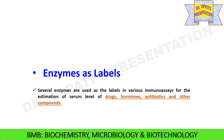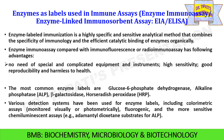Enzymes are also used as labels in various immunoassays for the estimation of serum levels of drugs, compounds, hormones, antibiotics and other compounds. Enzyme-linked immunoassay, or enzyme immunoassay (EIA), or enzyme-linked immunosorbent assay (ELISA) is a highly specific and sensitive analytical method that combines the specificity of immunology and the efficient catalytic binding of enzymes. Compared with immunofluorescence or radioimmunoassay, enzyme immunoassay has the following advantages: no need for special and complicated equipment and instruments, high sensitivity, good reproducibility and harmless to health.